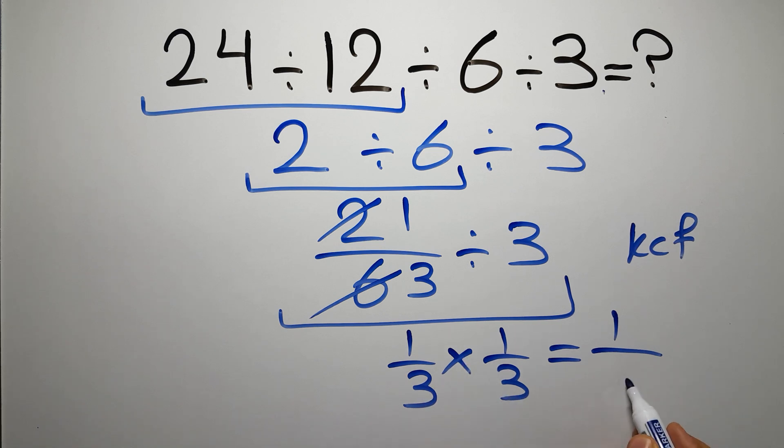So 1 over 9, and this is our final answer to this problem. The correct answer is 1 over 9.